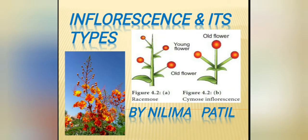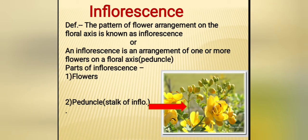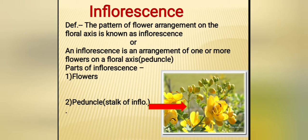Let's revise the topic: inflorescence and its types. What is inflorescence? The pattern of arrangement of flowers on the floral axis is called inflorescence. This is the inflorescence axis on which the flowers are arranged. In inflorescence, one or more flowers may be present. If only one flower is present, that inflorescence is called solitary inflorescence. Parts of inflorescence: first, flowers, and then the stalk of inflorescence, which is called as peduncle. Remember: stalk of inflorescence is called peduncle, and stalk of a flower is called pedicel.